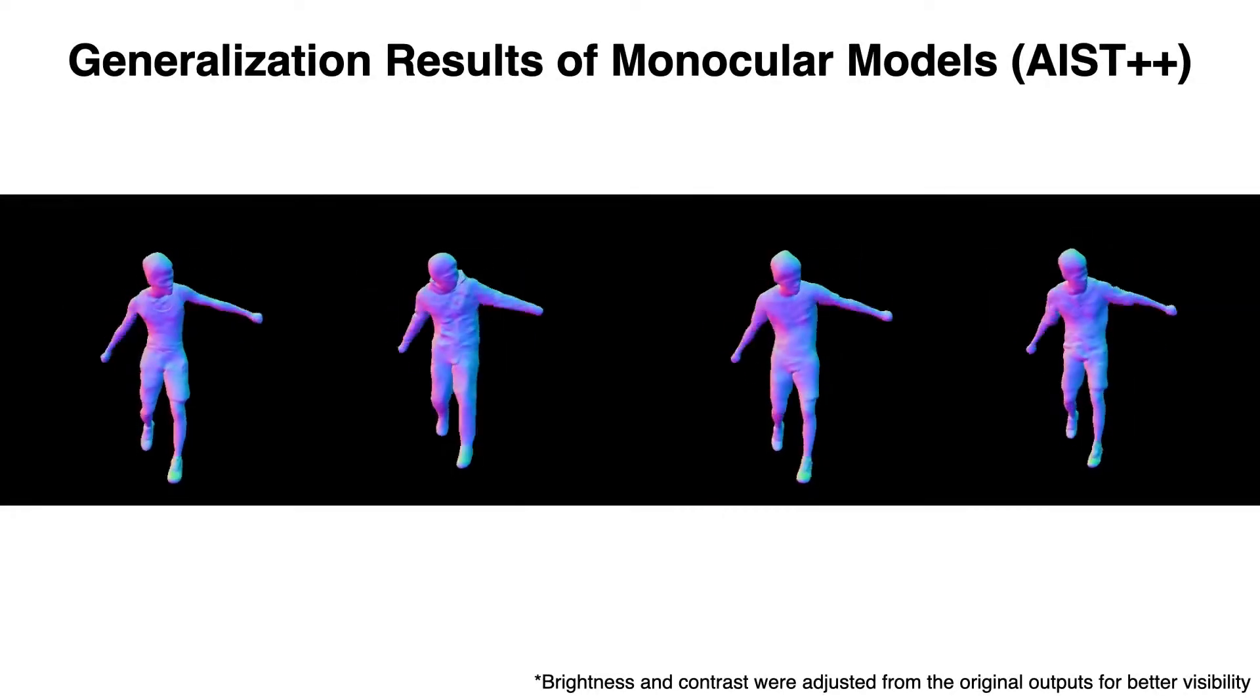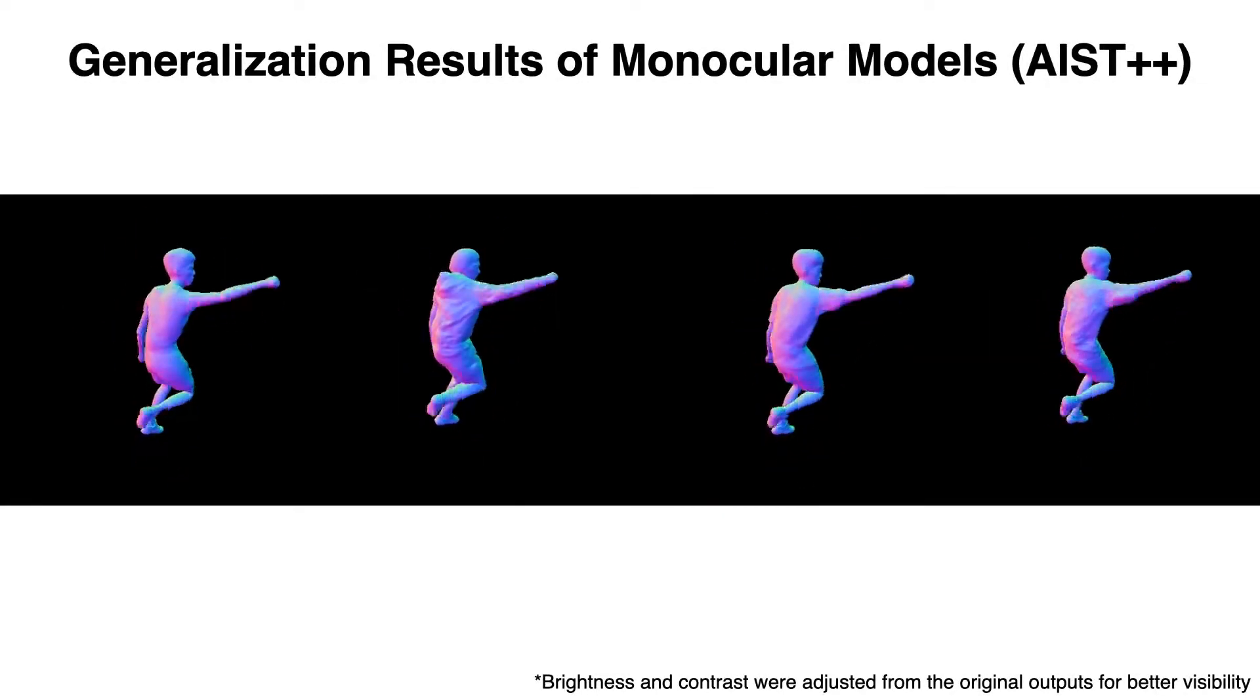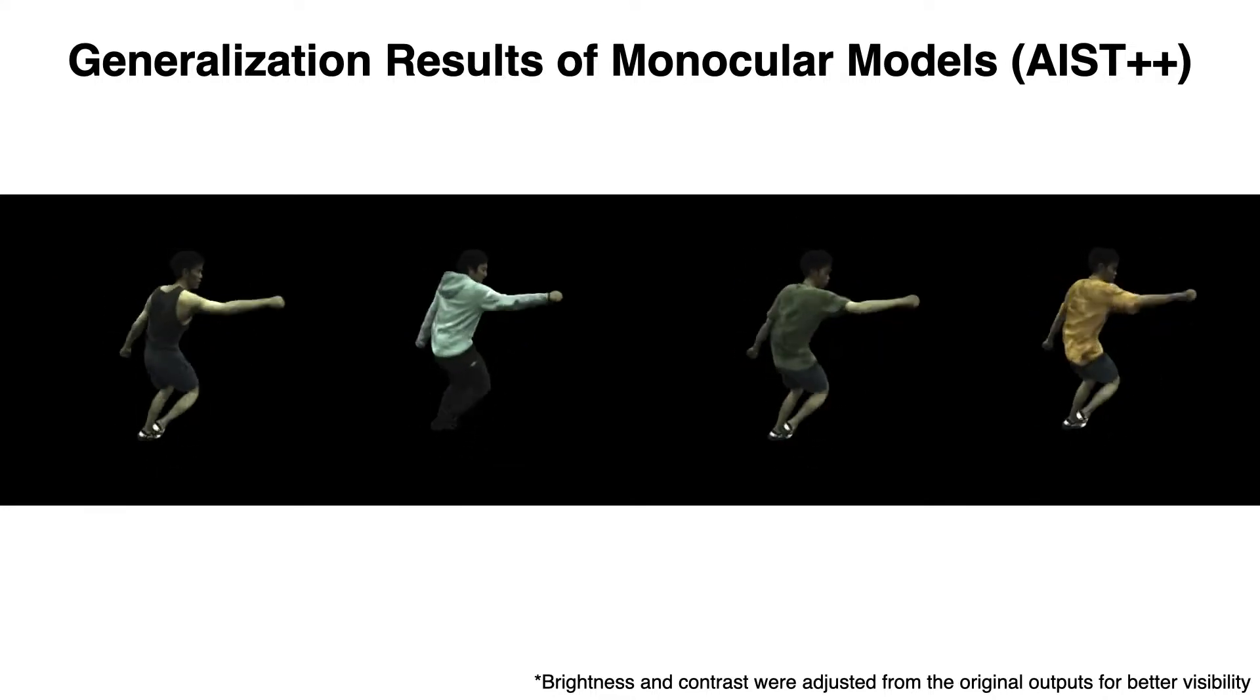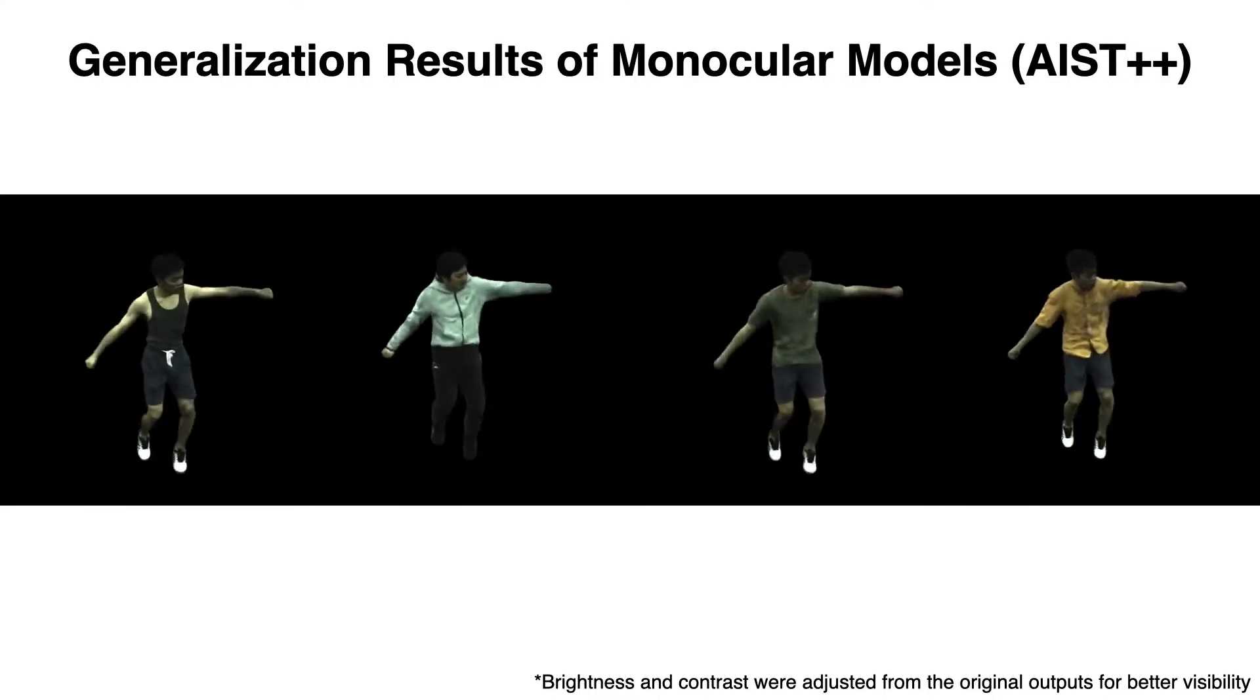We also show results on models trained from monocular videos. Even trained from a single view, our model can still produce plausible pose-dependent geometry and appearance on out-of-distribution poses.